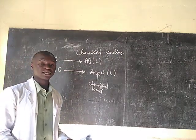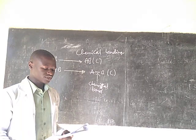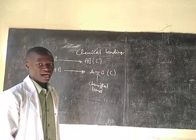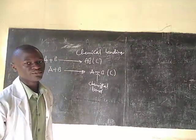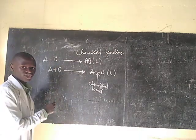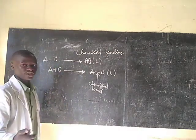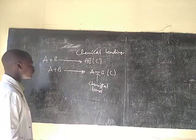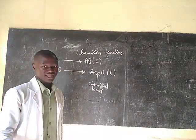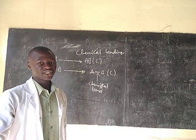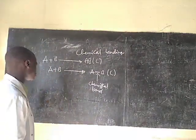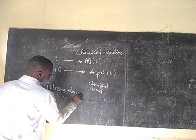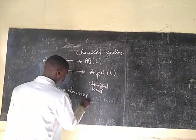Atoms can gain stability either by donating, gaining, or sharing electrons. So these atoms when they are joining together gain stability through three methods. The first one is by losing electrons. Losing electrons is done by the elements known as metals — metals always lose electrons when forming chemical bonds.